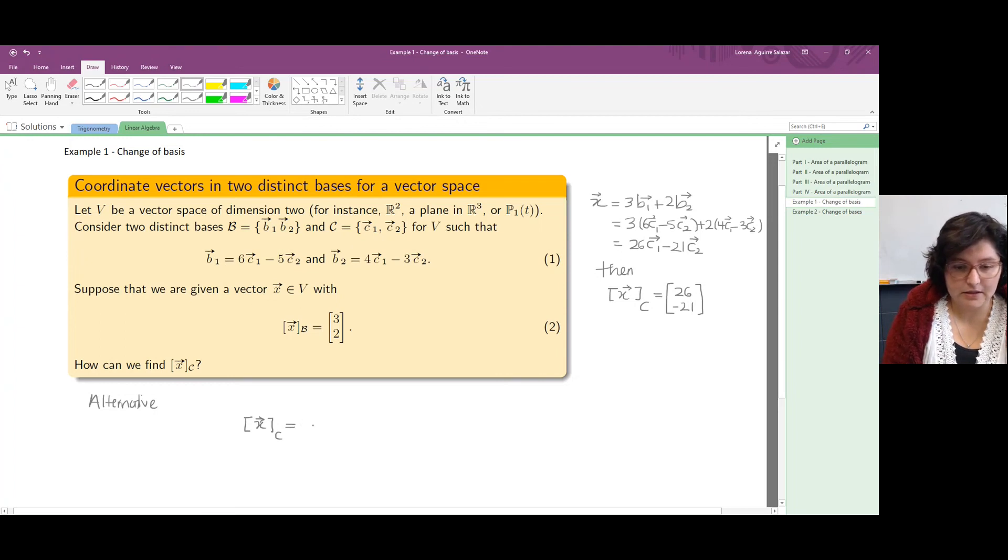B1 is 6C1 minus 5C2 and then B2 is 4C1 minus 3C2. To get coordinates of X with respect to C, we multiply this matrix by coordinates of X with respect to B.